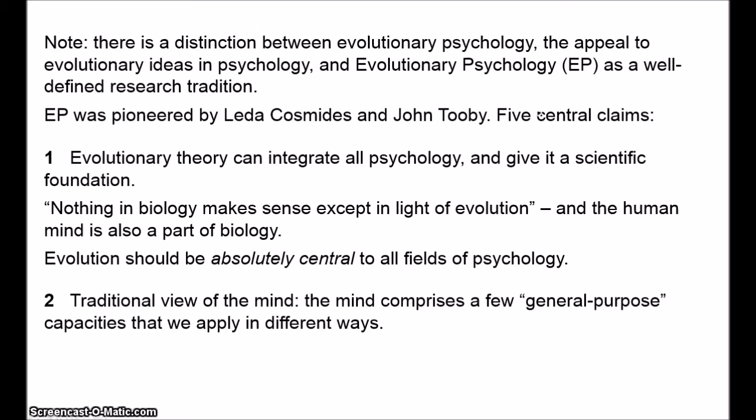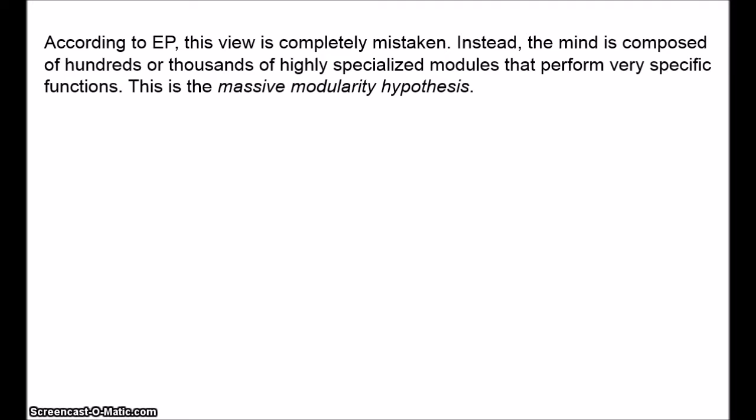According to evolutionary psychology, this view is completely mistaken. Once we take an evolutionary view of the mind, we see that it can have few, if any, general-purpose capacities. Instead, we should expect it to be composed of a variety of disparate, highly specialised modules that perform very specific functions. Cosmides and Tooby suggest the mind may be composed of literally thousands of highly specialised modules — this is known as the massive modularity hypothesis. There are many who think the mind may be partially modular (modest modularity), but evolutionary psychology proposes massive modularity.